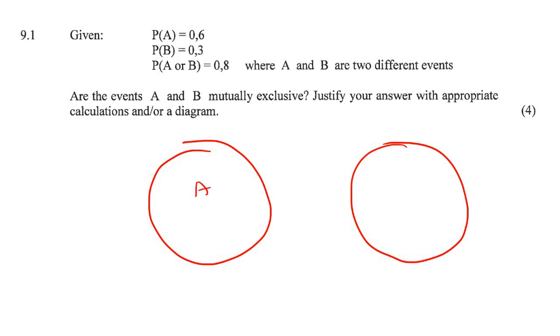It is two events, A and B, that cannot happen at the same time. For example, you cannot have someone who does maths and maths literacy. People who do maths and then people who do maths literacy, but you can't have people who do maths and also do maths literacy at the same time. That is what mutually exclusive is.